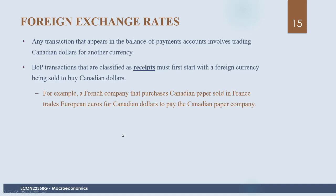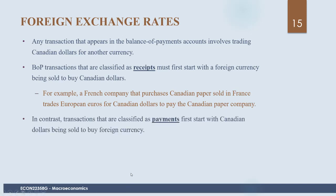For example, if a French company purchases Canadian paper, they would trade their euros for Canadian dollars. In contrast, transactions classified as payments first start with Canadian dollars being sold to buy foreign currency. For example, a Canadian buying the services of a Japanese architect would exchange Canadian dollars for Japanese yen to pay for those services.